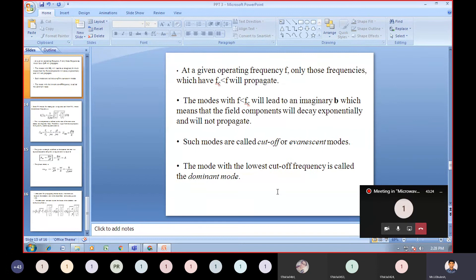At a given operating frequency f, only those frequencies which have f_c less than f will be propagated. If the mode with f less than f_c will lead to an imaginary β, which means that the field components will decay exponentially and will not propagate. Such modes are called cutoff or evanescent modes. The mode with the lowest cutoff frequency is called the dominant mode.